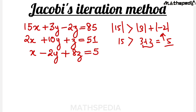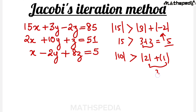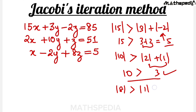Always remember — diagonal. So 10 is the diagonal element for the second equation, and 10 should be greater than the sum of the other two elements, which is 2 plus 1 equals 3. So 10 is greater than 3 — satisfied. Third equation, the diagonal element is 8. So 8 should be greater than 1 plus 2 (modulus of minus 2) equals 3. So 8 is greater than 3 — satisfied. Only then you can apply Jacobi's iteration method.